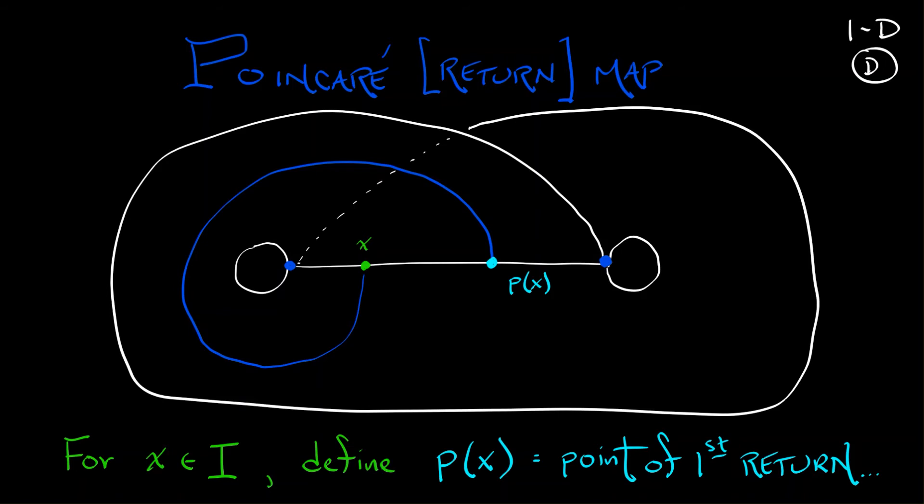Now, here's the thing. Once you do that, you can keep going. And you can look at the continuation of that flow line until you hit the branch line again. And guess what that is? That is P(P(x)), or if you like, P squared of x. We're iterating that discrete time dynamical system forward. And you keep going and going and talk about the dynamics of the flow on the geometric Lorenz attractor in terms of orbits of the Poincaré map.